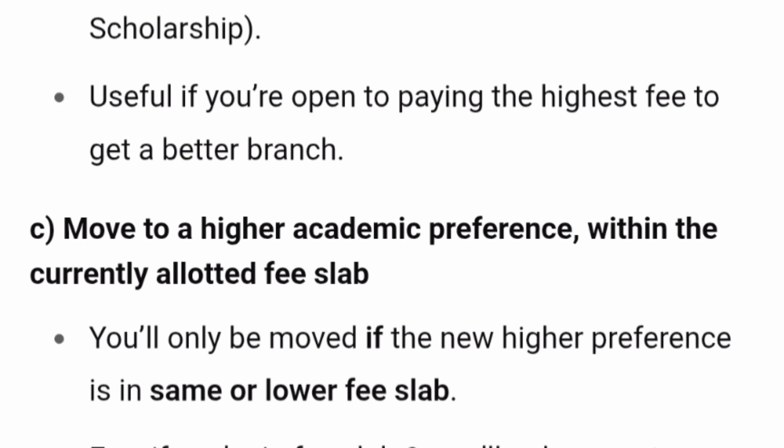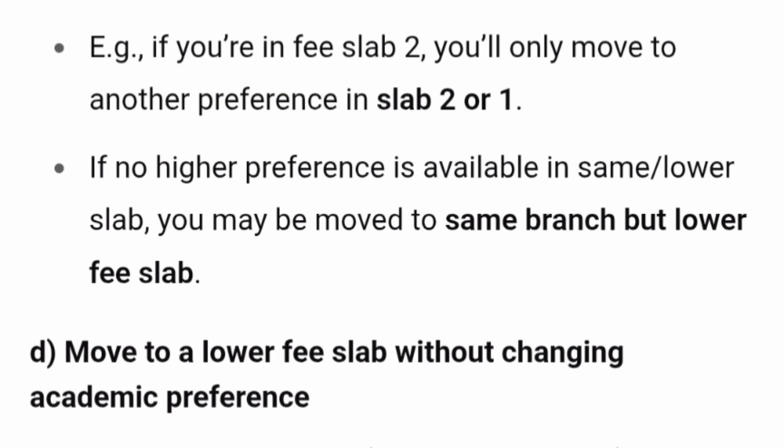Type C: Move to a higher academic preference within the currently allotted fee slab. The student says they want to pay only their current slab fees — for example, slab 1 — and if a higher preference is available in the next round at the same or lower fee slab, move them there. They will not be charged a higher fee slab. If no higher preference is available in the same or lower fee slab, they retain the same branch but at the lower fee slab.